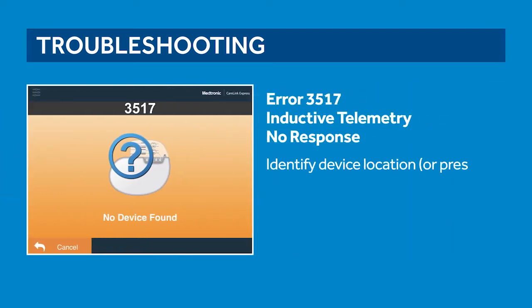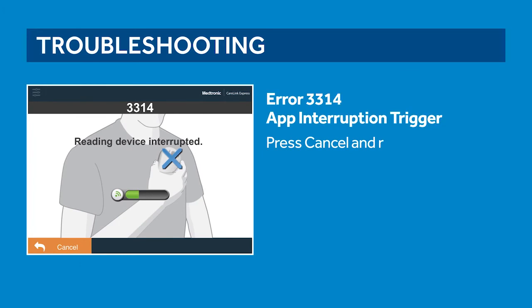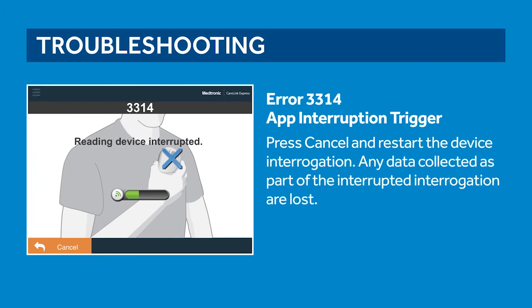Error 3517: inductive telemetry no response. There is no communication to the implanted device. Relocate the patient connector to move closer to the implanted device. Error 3314: app interruption trigger. When the app is interrupted by a host device function — for example, navigating away from the app or accepting a phone call — press cancel and restart the device interrogation. Any data collected as part of the interrupted interrogation are lost.